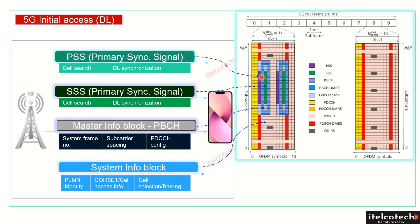We have seen that the PSS, shown in purple, is fixed; the SSS (secondary synchronization signal), shown in green, is also fixed; and then we have the broadcast channel including the DMRS, shown in light and dark blue, which is also fixed.